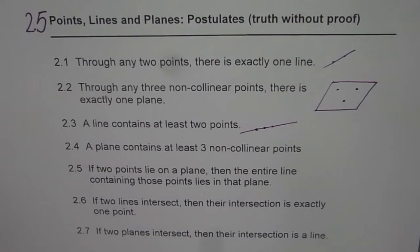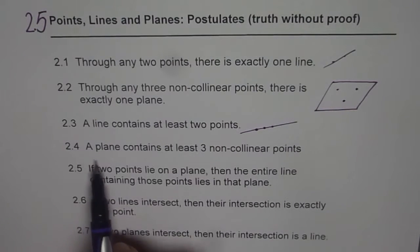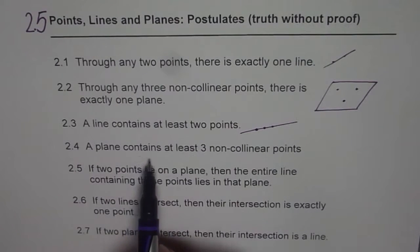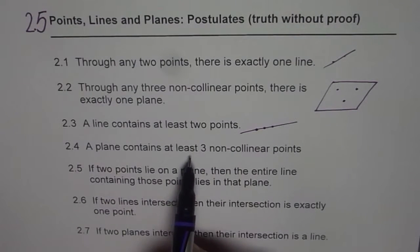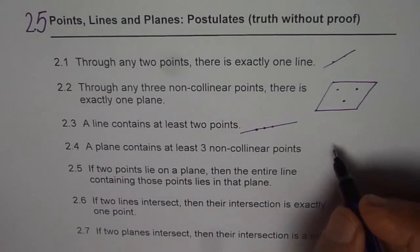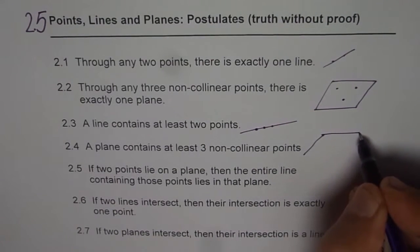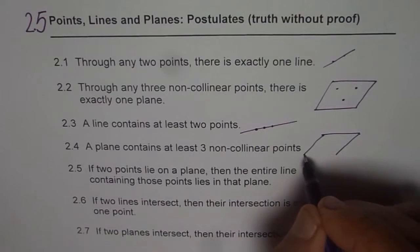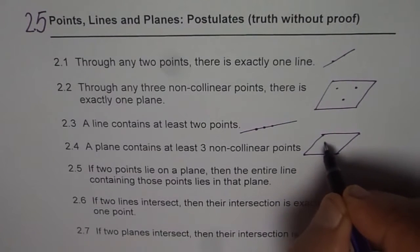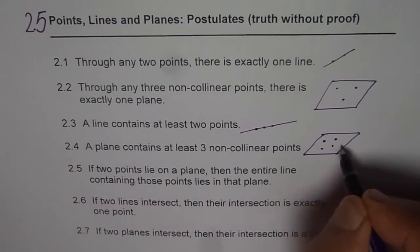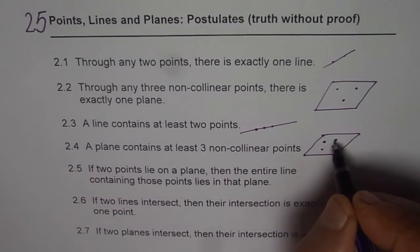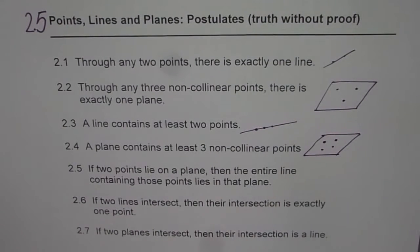Postulate 2.4: A plane contains at least three non-collinear points. There can be an infinite number of points on a plane, but the minimum is three — there could be four, five, or any number, but at least three.